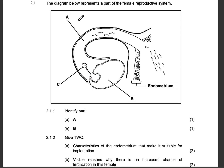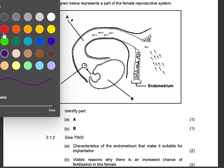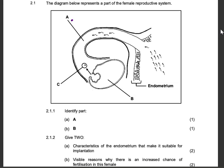Identify part A. So part A is the fallopian tube — or oviduct, but in matric we say fallopian tube.